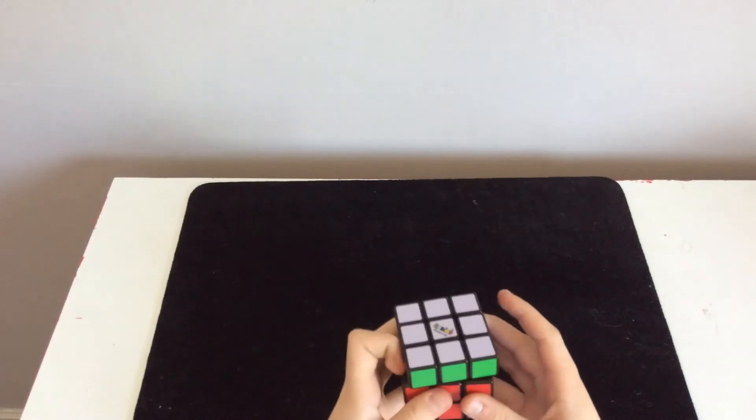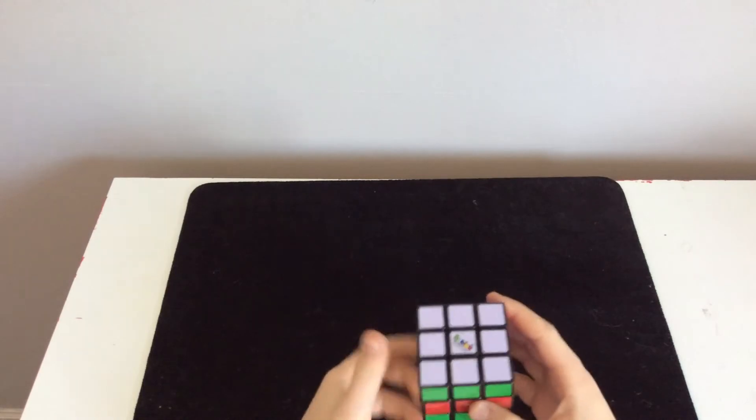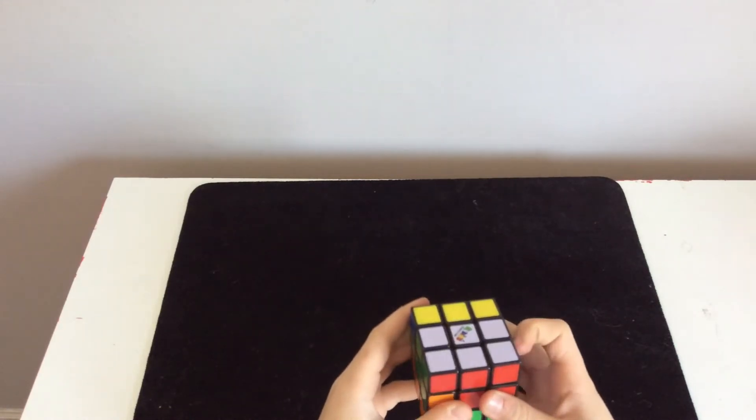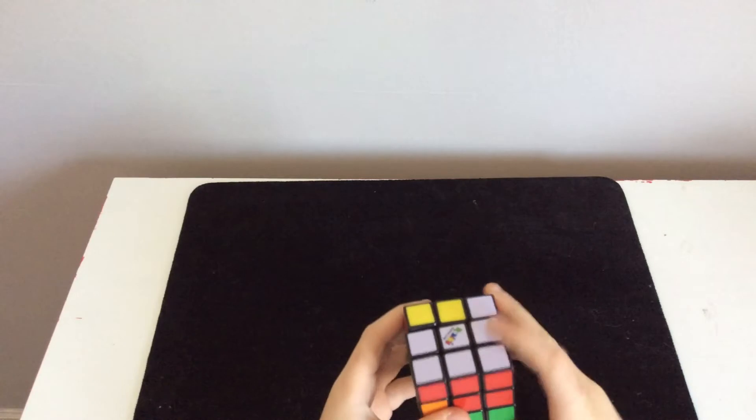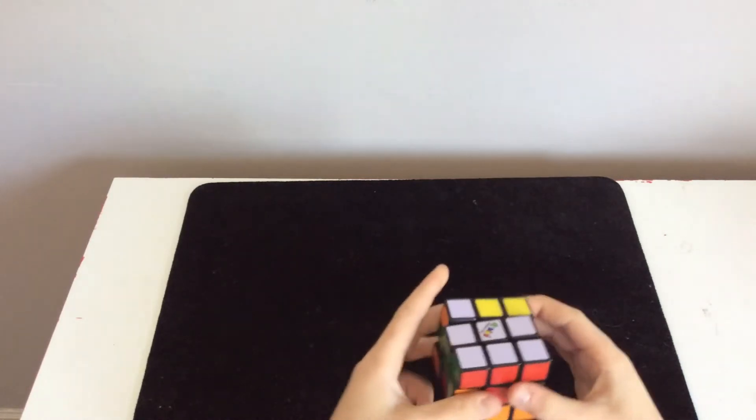You're going to start out with an up inverted, and then you're going to do a down. Then a left 2, and then a U, a back 2, then a D2, then a back 2, then a D2 again.